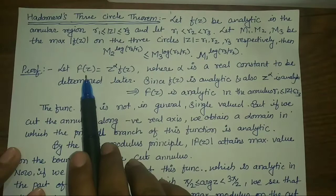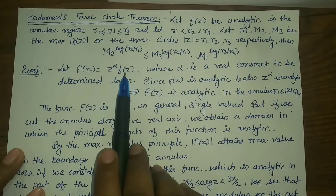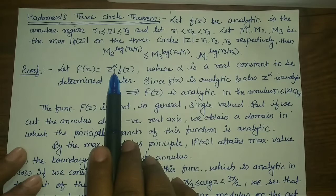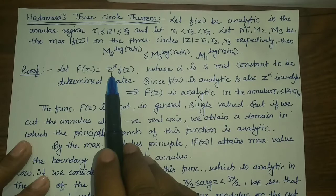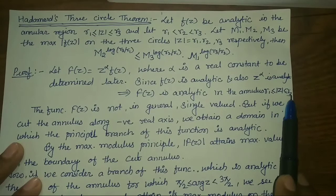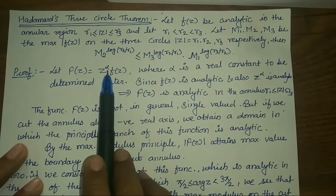To prove this relation, first of all we consider the function F(z) equal to z to the power alpha into small f(z), where alpha is a real constant whose value we will calculate ahead. Since the function small f(z) is analytic and also z to the power alpha is analytic, it is clear that the function capital F(z) is also analytic in the annulus where mod z lies between R1 and R3.